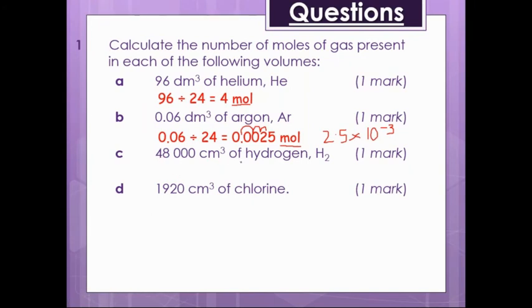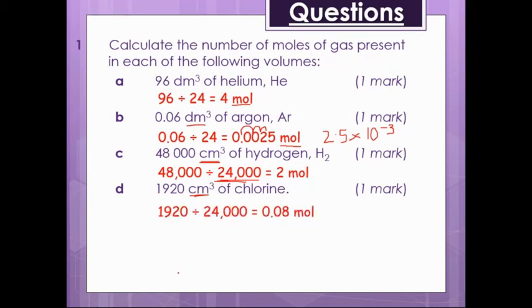Because it's just the units that are cubed. It's not the actual number. So if that 3 there was here, then yeah, I would definitely have to do 96 cubed. But the cubed is on the units. In that case, I don't have to cube it as well. Thank you for that. That was a nice question. Next one, 48,000 centimeter cubed of hydrogen. Now it's a centimeter cubed instead of decimeter. So we're going to have to divide it by the 24,000. So 48,000 divided by 24,000 equals 2 mole. And then the last one, we're in centimeter cubed again. So we're going to divide by 24,000 again. So 1,920 divided by 24,000 is 0.08 mole.